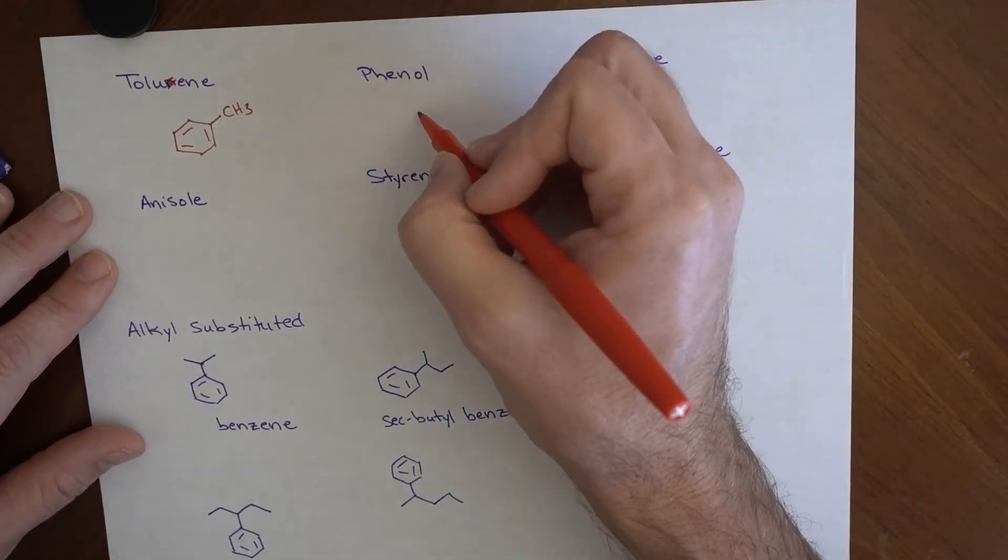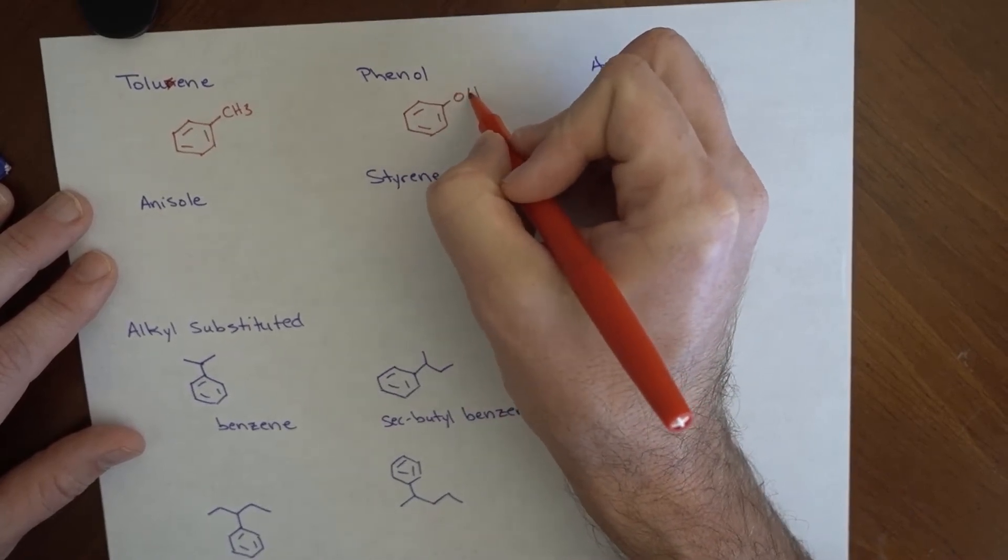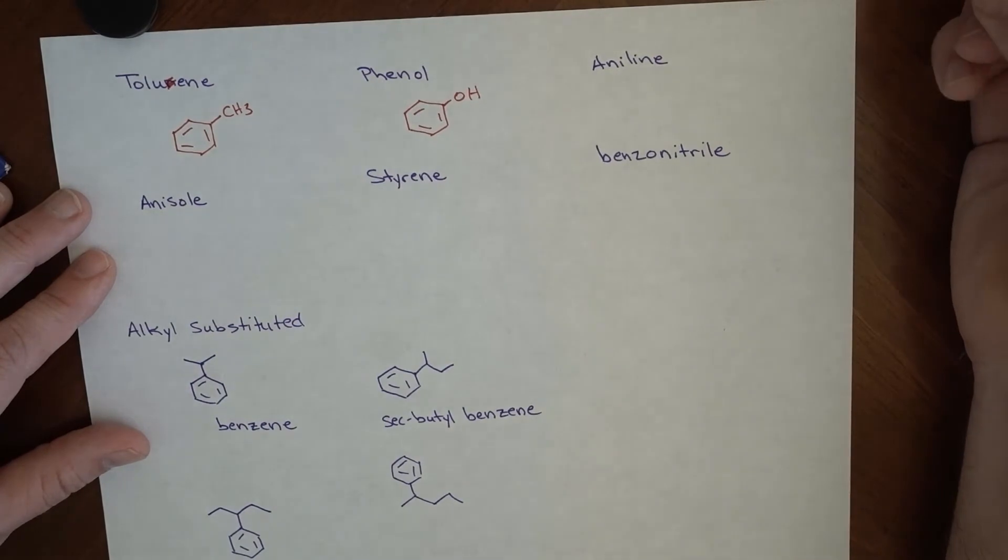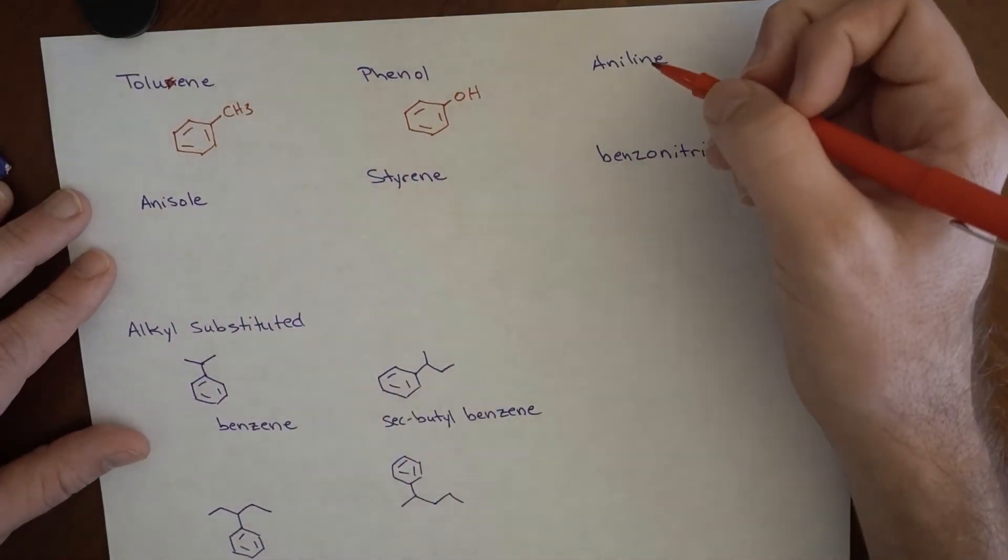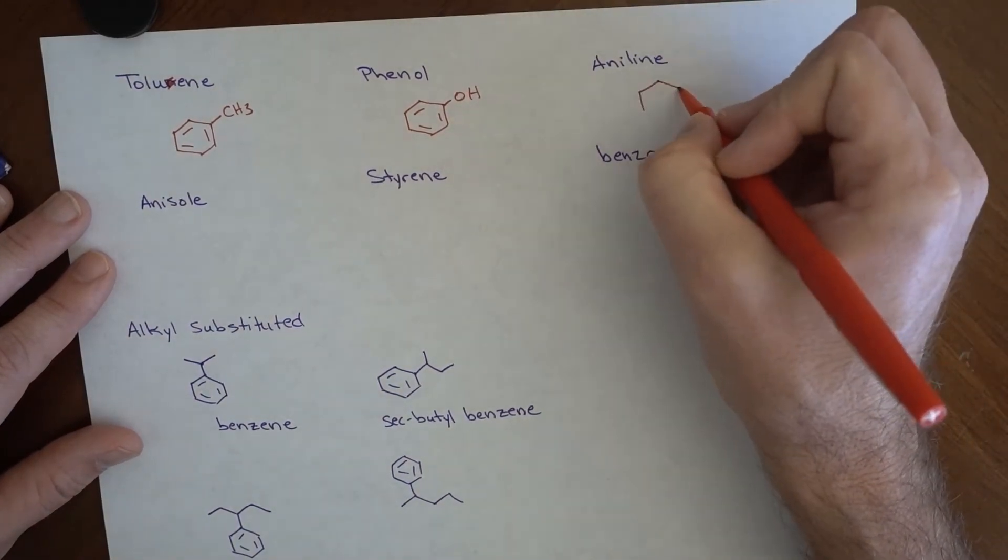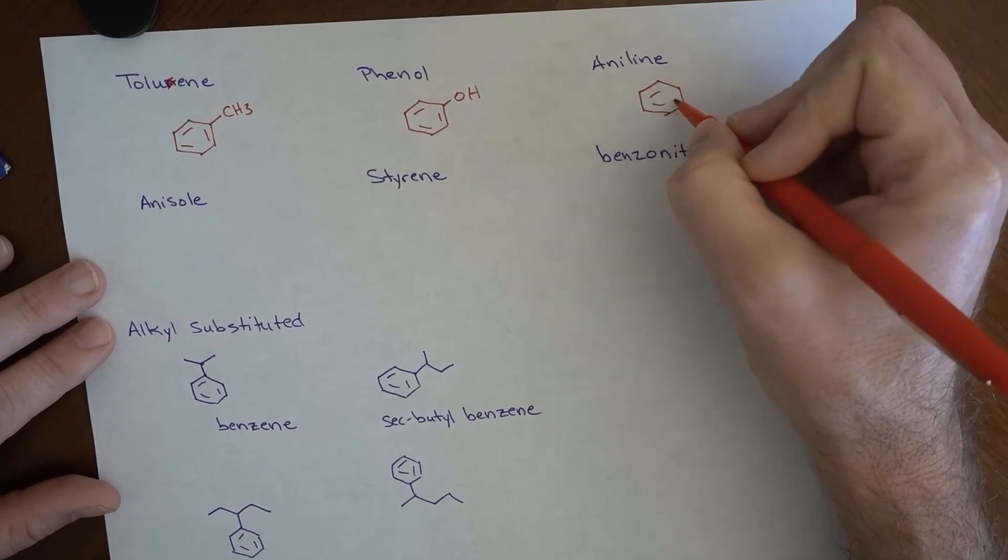Same thing for phenol. So this would be a phenyl alcohol. And there's an OH. And that gets the common name phenol. And you'll want to sort of, there's really no other way to do it but to commit these to memory. Your book gives you a bunch of these.